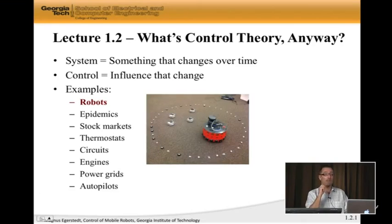Some examples, and we're going to see all of these examples in the class, of systems that one can control would be robots, epidemics—you can come up with vaccination strategies—stock markets, thermostats for keeping the temperature pleasant indoors, electrical circuits, DC engines, power grids, or autopilots on aircraft.